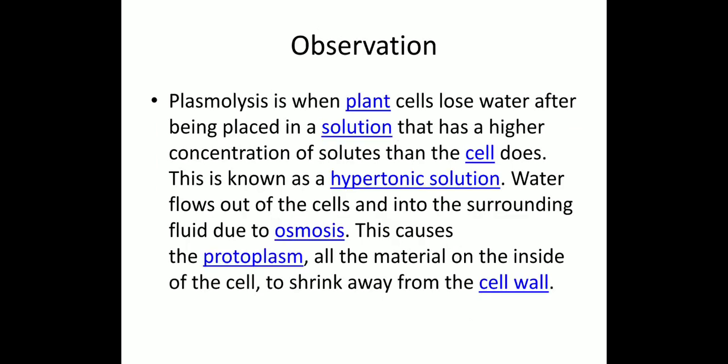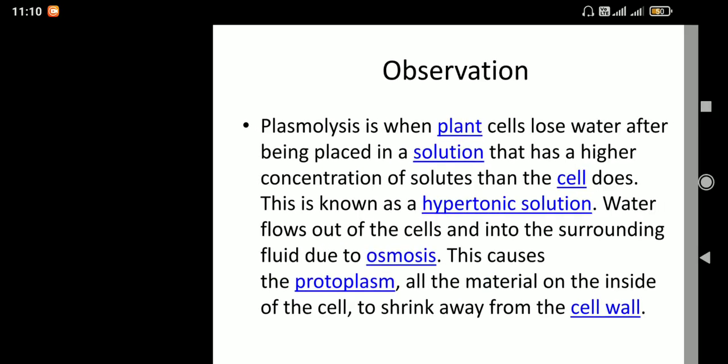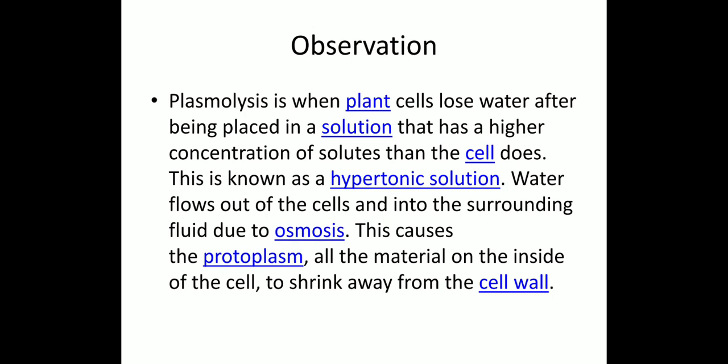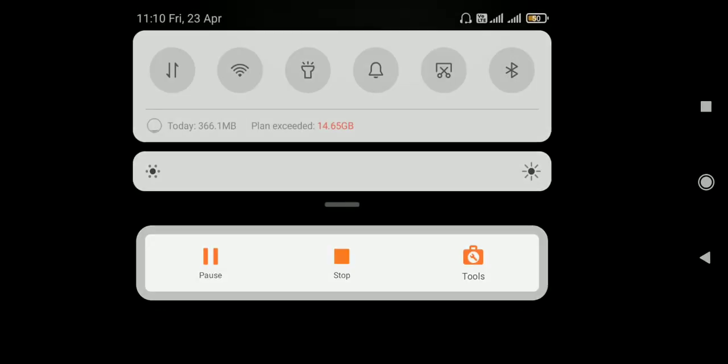We have observed that plasmolysis is seen in a plant cell when it loses water and is placed in a solution which has a higher concentration of solute. This is known as hypertonic solution, because the solution outside the cell has a very high concentration. In that condition, water flows out of the cell through the process of osmosis, and it causes the protoplasm to shrink away. This is the cell wall and the process of plasmolysis. I hope that you all have understood. If any confusion remains, you can ask. Take care and have a nice day. Bye.